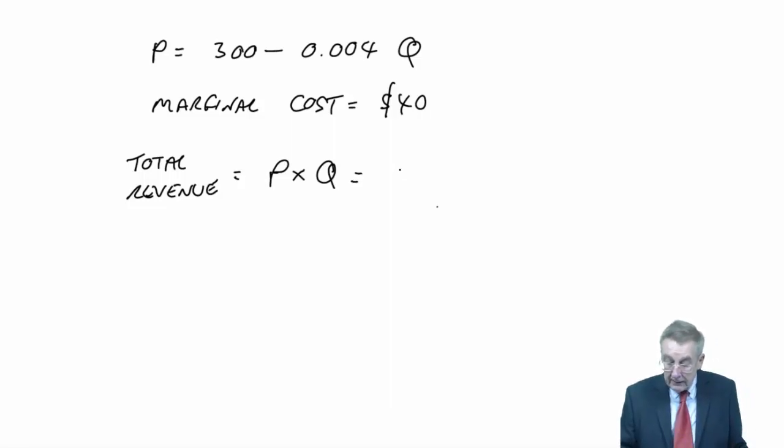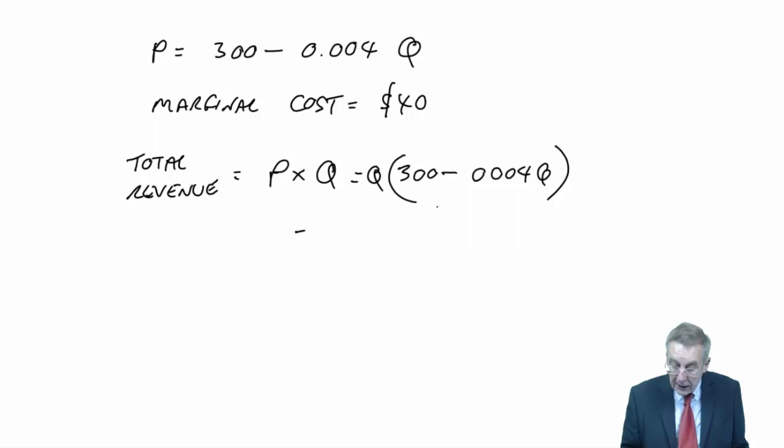Well, here, I know that the selling price P is 300 minus 0.004Q. And if we multiply every term by Q, we get 300Q minus 0.004Q squared.